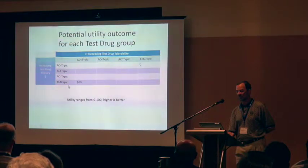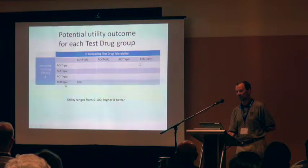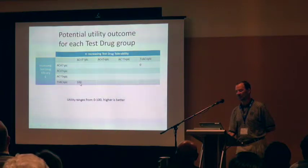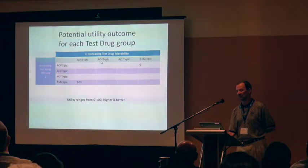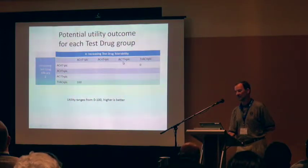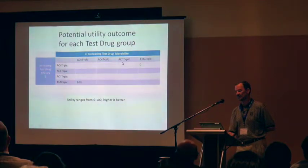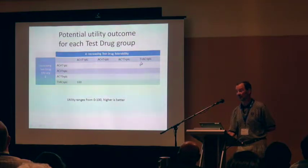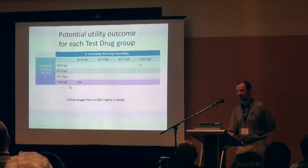In the best efficacy case where the test treatment is better than the active control, which is better than placebo, that's the best possible utility score of 100. We defined regions where the control had worse tolerability than the test treatment but the test treatment had worse tolerability than placebo, and a region where the test treatment is similar to the active control. The worst region is where the test treatment is worse than the active control. We defined similar ranges for efficacy.